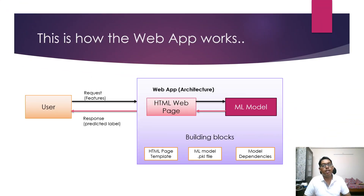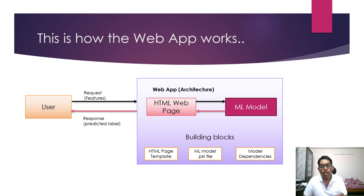This is how the web app works. The user requests some features through the HTML web page. The request goes into the ML model for calculation, imports from the mlmodel.pkl file, and then gives a response back to the web page, which displays the predicted label.